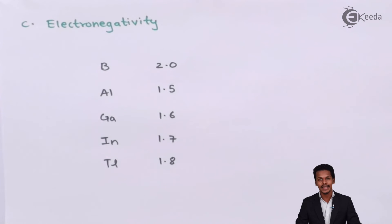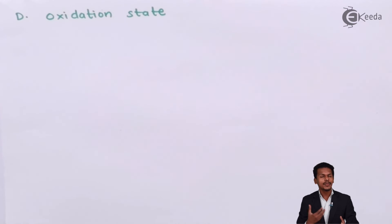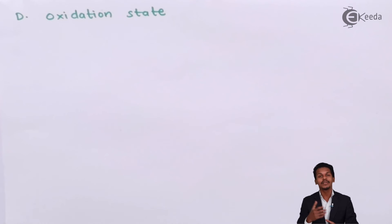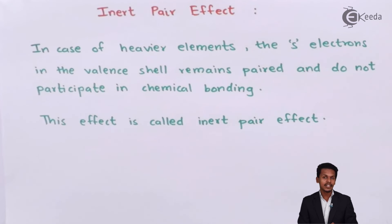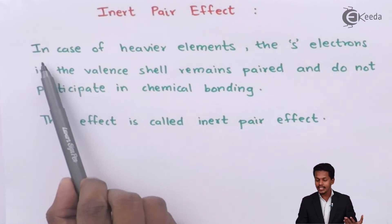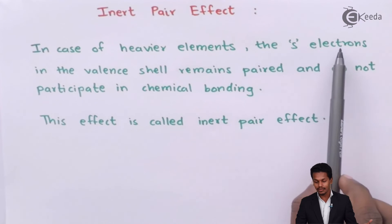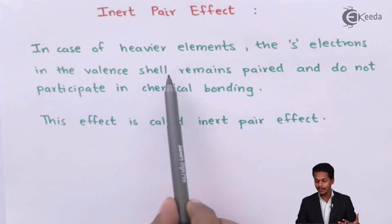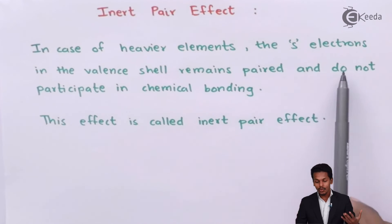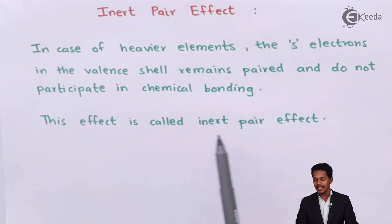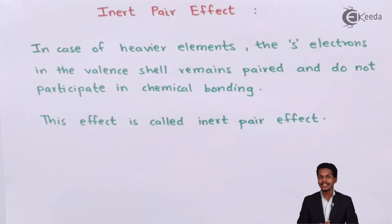Now let us talk about oxidation state. Before that, there is a concept I want to discuss — the inert pair effect. In case of heavier elements, the s-electrons present in the valence shell remain paired and do not participate in chemical bonding. This effect is called the inert pair effect.